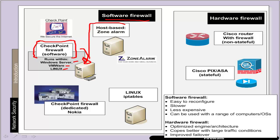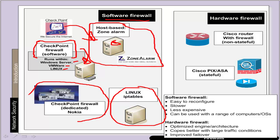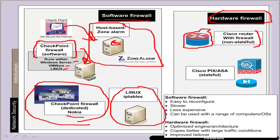Zone Alarm, also owned by Checkpoint, is a good example of a host-based firewall which runs on client hosts. We can also have Linux firewall software, and Checkpoint firewalls with dedicated hardware such as the Nokia firewall. A hardware firewall is a dedicated device optimised for running routing and firewall software. We can have a non-stateful firewall with a router with firewall added — doing packet inspection where each packet is inspected for its source and destination address and TCP source and destination port. We can also have a stateful firewall such as the PIX and PIX ASA.